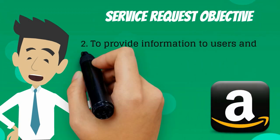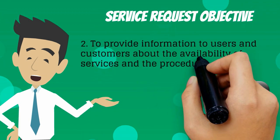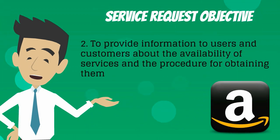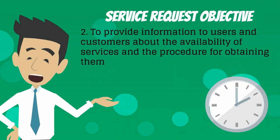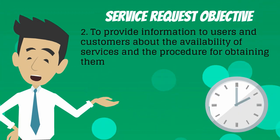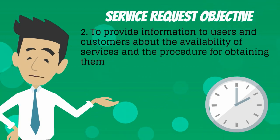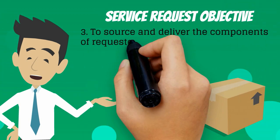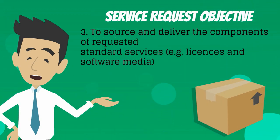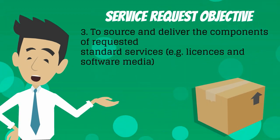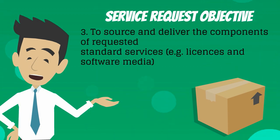Objective 2: To provide information to users and customers about the availability of services and the procedure for obtaining them — for example, ordering instructions, product availability, and delivery timelines mentioned on the Amazon site. Objective 3: To source and deliver the components of requested standard services, for example licenses and software media. Here we are ensuring that the product is unboxed and delivered.